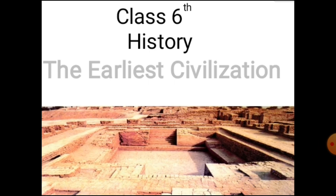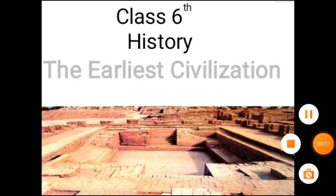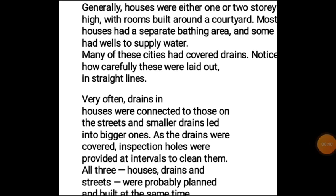Generally the houses were either one or two storeys. In the lower town, houses belonged to common people like artisans and craftsmen. They had separate rooms for each purpose — a separate room for a coat area, a separate space for washing and bathing.